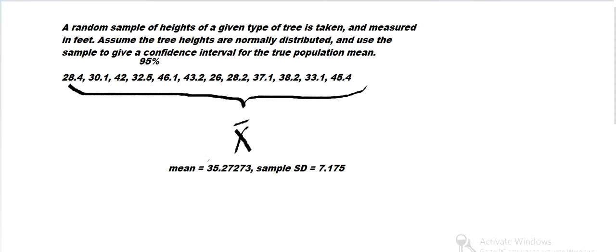And then, so we've got this estimate, this is called a point estimate. So we're using this sample to estimate the overall mean. So it's about 35.273, but it has some error in it.